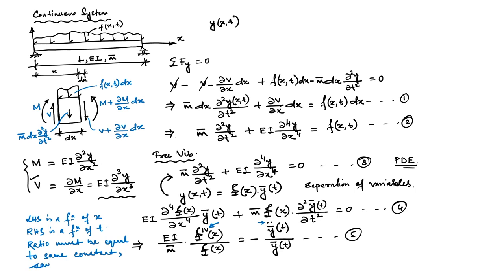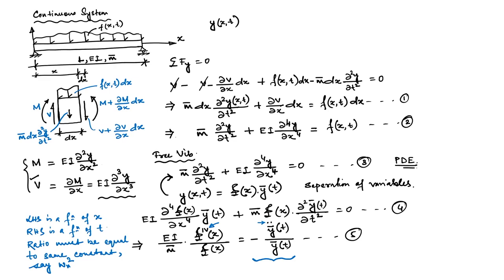Since the left hand side is a function of x and the right hand side is a function of t, the ratio must equal the same constant. We identify this constant as ωₙ². You already know what ωₙ is. If we equate the right hand side to ωₙ², we immediately get the equation we studied earlier for the discrete system.